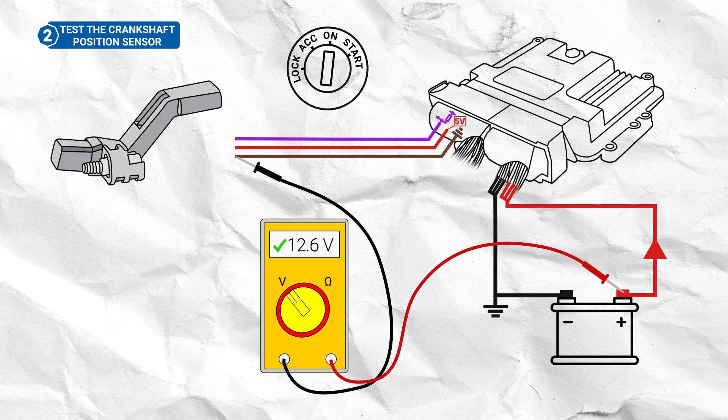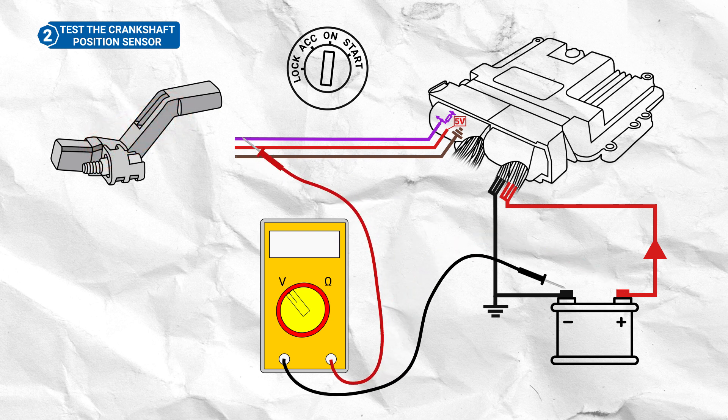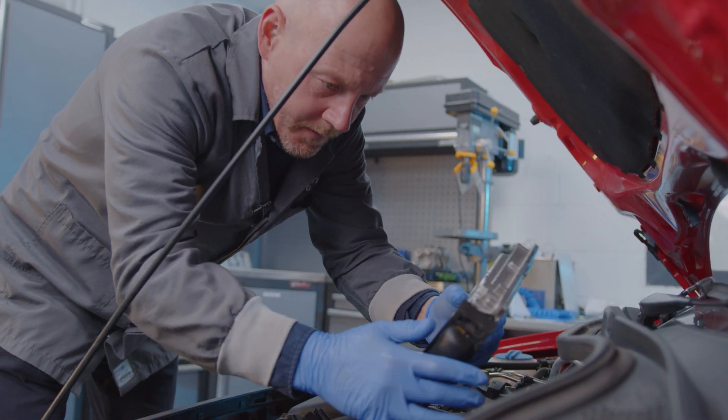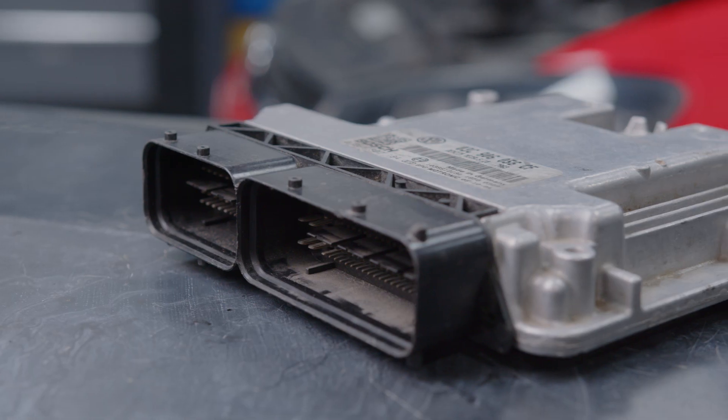If these readings all check out okay, then the sensor itself is likely causing the fault codes to appear, and will need to be replaced. However, if any of the readings were incorrect, then we need to investigate further to determine if the fault lies within the wiring loom or ECU.